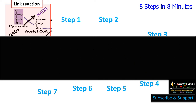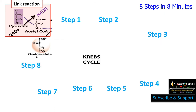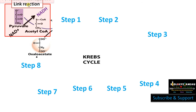After glycolysis, what we have is pyruvate. Pyruvate enters mitochondria and forms acetyl coenzyme A. This reaction is called the link reaction as it connects glycolysis and Krebs cycle. In that reaction, NADH is formed and carbon dioxide is released. The reaction is oxidative decarboxylation and the enzyme involved is pyruvate dehydrogenase.